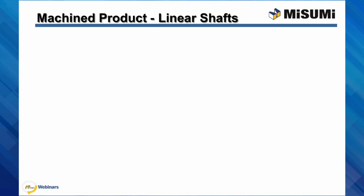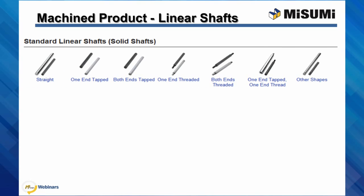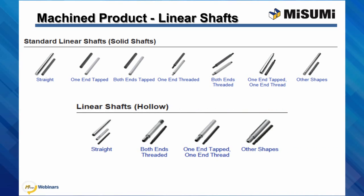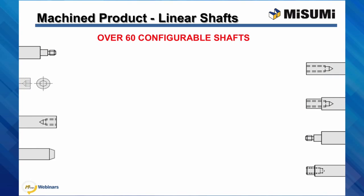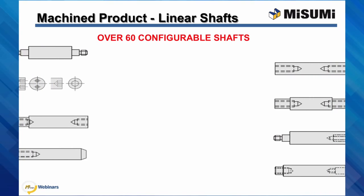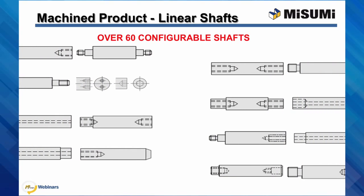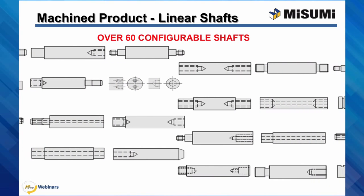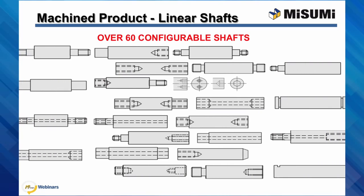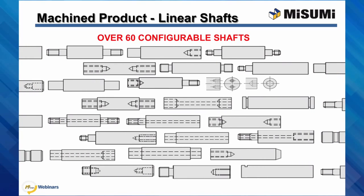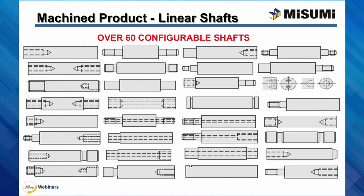Now that we have a good understanding of linear shafts, let's take a look at Misumi's offerings. Our two main categories for linear shafts are solid shafts and hollow shafts. These can then be broken down into selectable end shapes that can be further specified into a configurable shaft. Misumi offers over 60 configurable shafts.